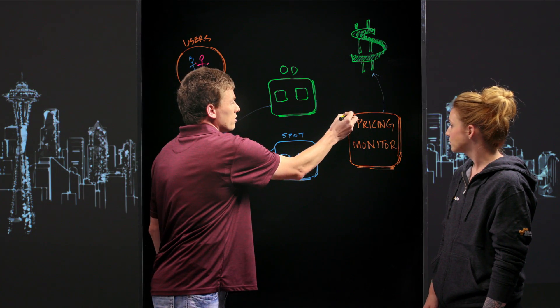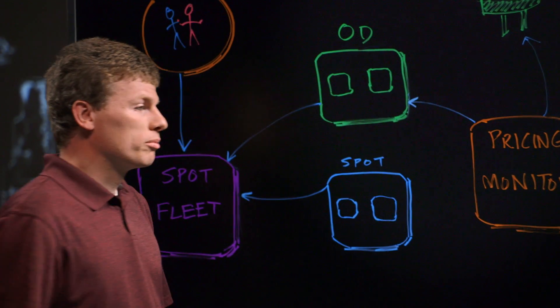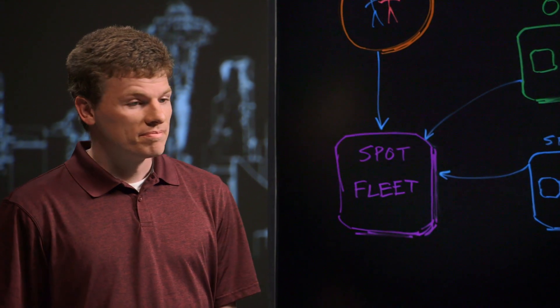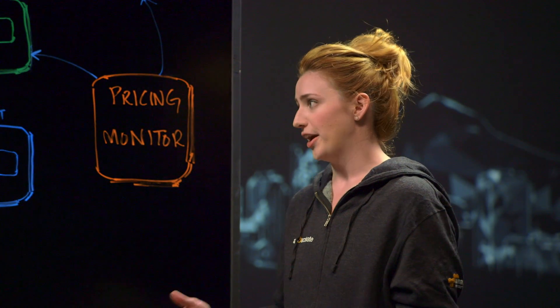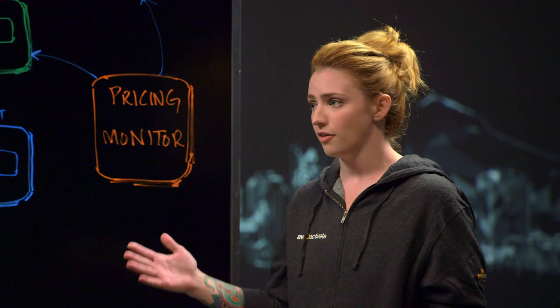And if there's a problem and we're going to start losing instances, it sends a signal to the on-demand autoscaling group and tells it to create on-demand instances to replace those Spot instances. So I can poll constantly for price changes, and I can prefer to use my Spot instances, but if not, I can fall back to on-demand.